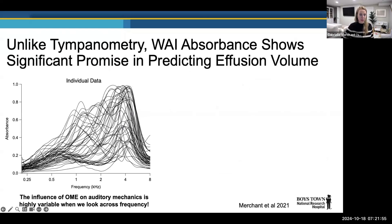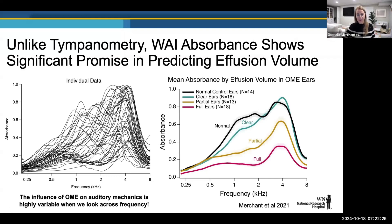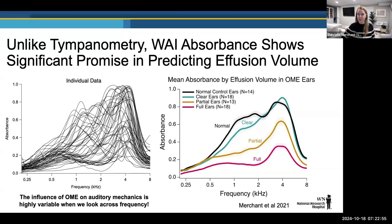Looking at individual wideband acoustic admittance data for all ears with OME, there's a lot of variability — which is actually telling us something meaningful about how much variability there is in how otitis media affects auditory mechanics. When we separate the data by effusion volume, we see very consistent effects: a consistent reduction in absorbance across frequency with full effusions, and as the amount of effusion decreases, the absorbance tracing improves. So if you get a tracing that's really low across the board, you may be able to infer that's likely a more full effusion versus a partial.